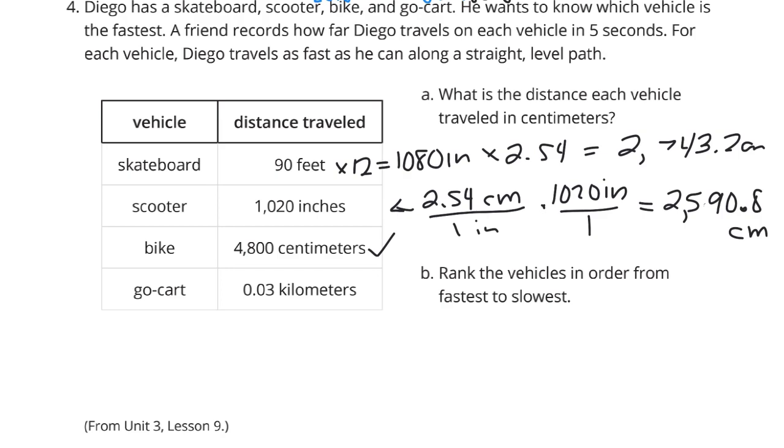The go-kart is 0.03 of a kilometer. There are 100,000 centimeters in one kilometer. So if I multiply this 0.03 of a kilometer by 100,000 centimeters in a kilometer, we end up with 3,000 centimeters.